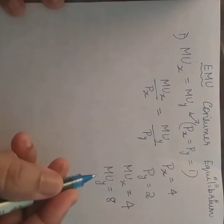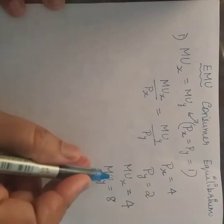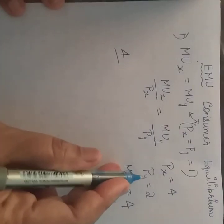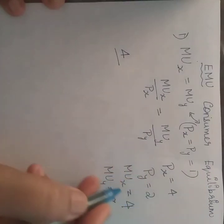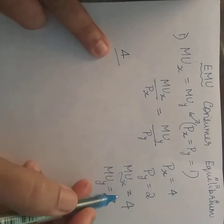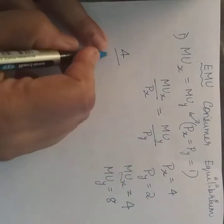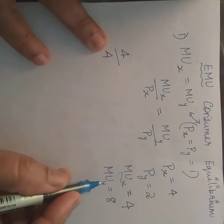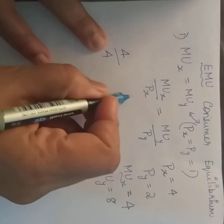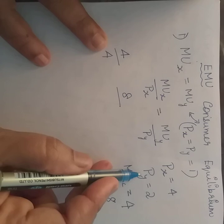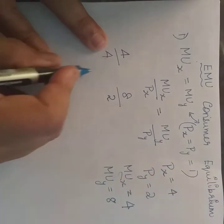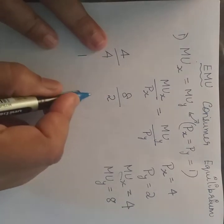Using this information: marginal utility of X divided by price of X is 4 divided by 4. On the other side, marginal utility of product Y is 8 and price of Y is 2. So this gives 1 on the left side and 4 on the right side.